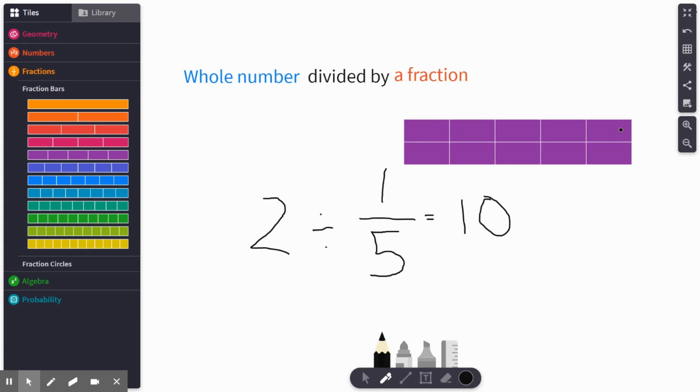The answer is 10. If I have two wholes and I break each one into five pieces, now I've turned two wholes into 10 equal size parts.